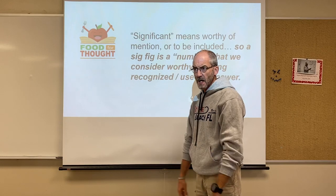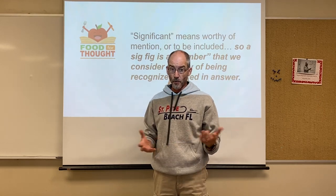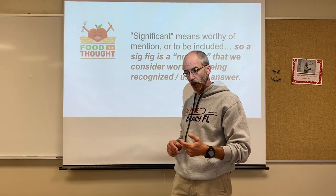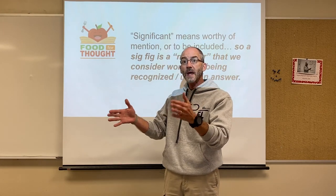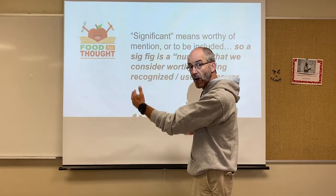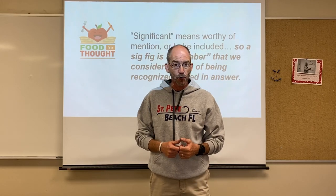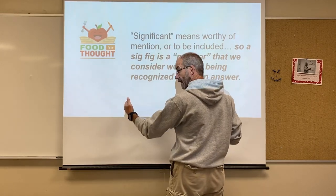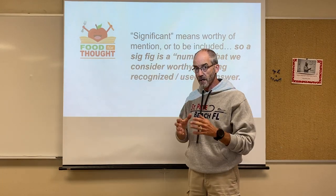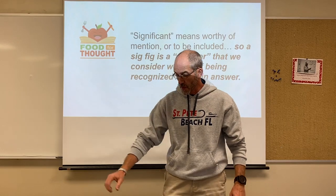This is the second presentation on sig figs. In the first, we covered three rules. Rule one: all nonzero digits are significant — 24.7 has three sig figs. Rule two: zeros between nonzero digits are significant — 1003 has four sig figs because the two zeros are between the 1 and the 3. Rule three: leftmost zeros acting as placeholders are not significant — 0.01 has only one significant figure.